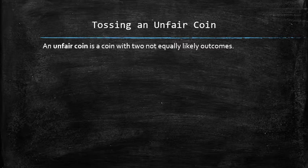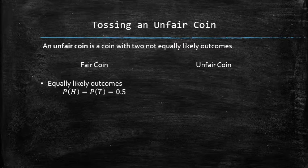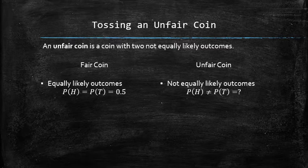Let's discuss the differences between a fair coin and an unfair coin. The outcomes of a fair coin are equally likely, and since there are only two of them, the probability of each one is equal to one half. The outcomes of an unfair coin are not equally likely, and hence the probability of each outcome is unknown unless some information is given.